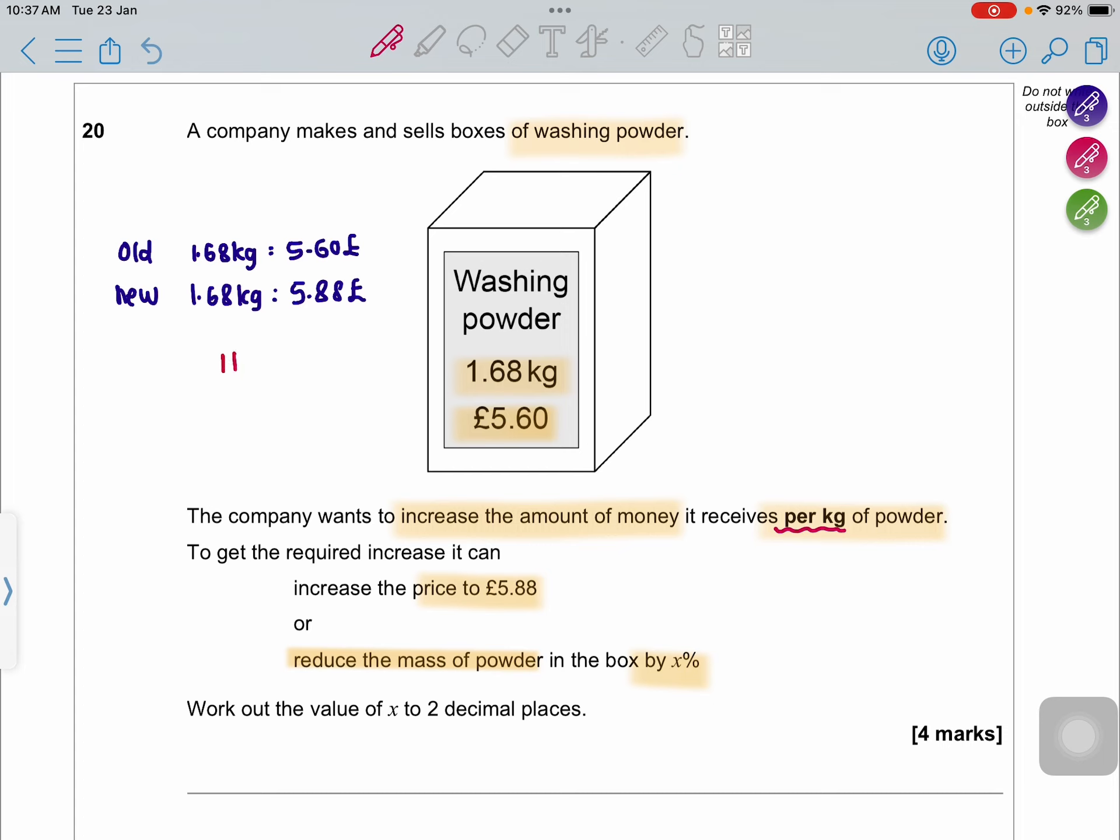In our question they are telling per kg of powder, so your approach is changing 1.68 kg to 1 kg. When you convert, the old price will be £3.33. How do I do that? I take £5.60 and divide by 1.68.